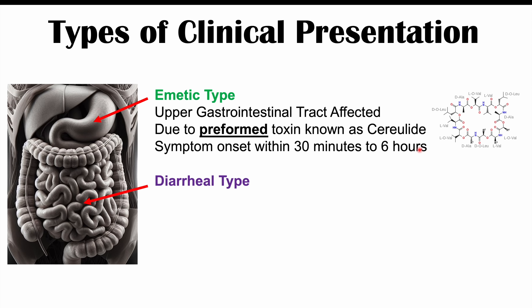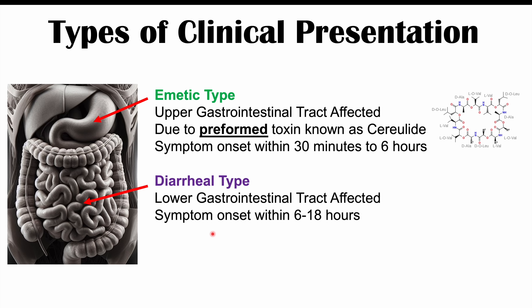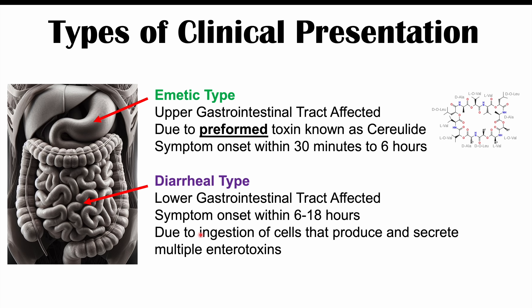The diarrheal type affects the lower gastrointestinal tract, with symptom onset generally within six to 18 hours — greater than six hours after ingestion. This is because the diarrheal type results from ingesting live cells that produce and secrete enterotoxins once inside the gastrointestinal system, which is why it takes longer to see symptoms.